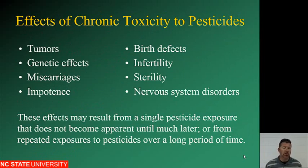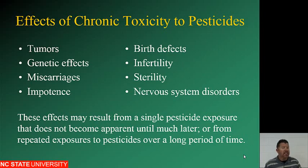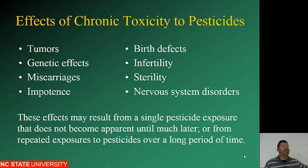Chronic toxicity effects include tumors, genetic effects, miscarriages, impotency, birth defects, infertility, sterility, and nervous system disorders. These effects may result from a single exposure that does not become apparent until much later. You may have only sprayed a pesticide once or twice in your life, and twenty years down the road you start seeing some of these effects. Or you can have repeated exposures to pesticides over a long period of time, even with less toxic chemicals.